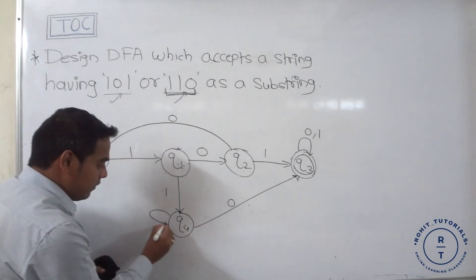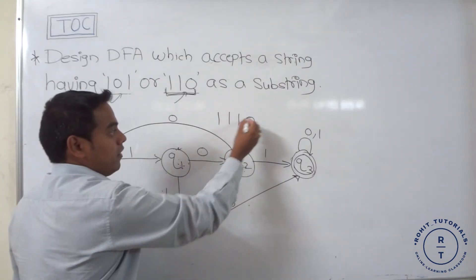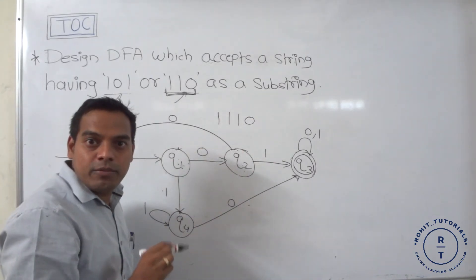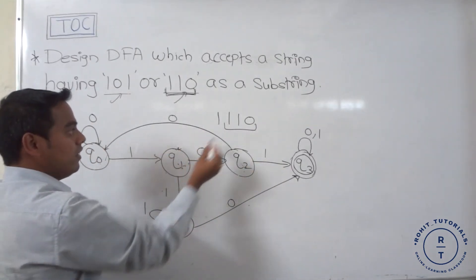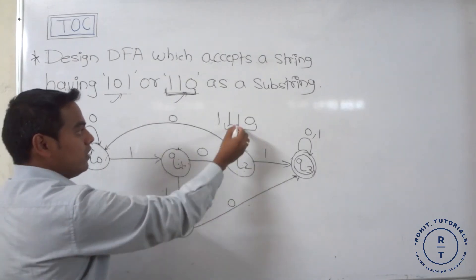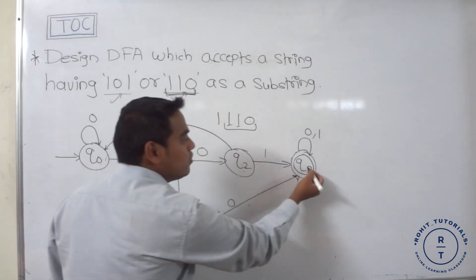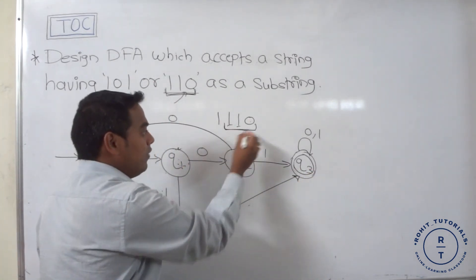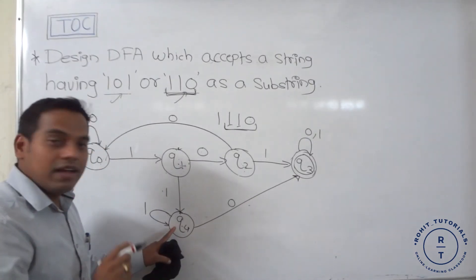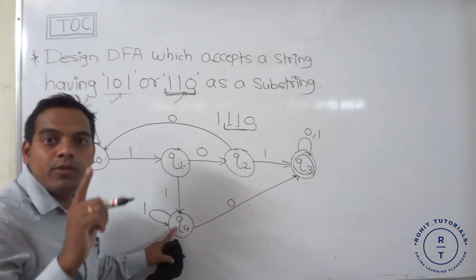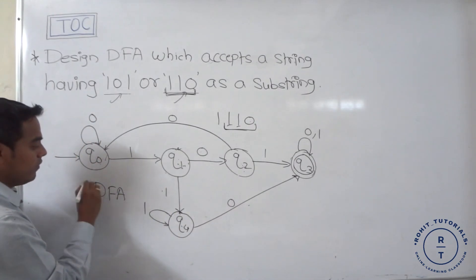If we provide a self-loop at Q4 when input 1 occurs, let's verify: for string 110, at Q0 state, 1 goes to Q1, again 1 — with the self-loop — remains at Q4, and last 0 goes to Q3. So with this self-loop, we have the correct transition for Q4 on input 1. This is the final DFA for the given problem.